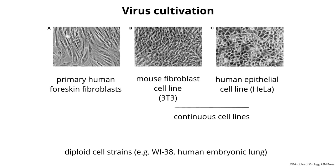These are called continuous cell lines. The problem is they're derived from tumors and are often aneuploid — they have abnormal numbers of chromosomes. If you're really interested in virus infection in a normal cell, you have to use primary cells. There are also diploid cell strains, which have the right number of chromosomes and live longer than primary cells — about 100 to 200 generations — but they don't live forever.